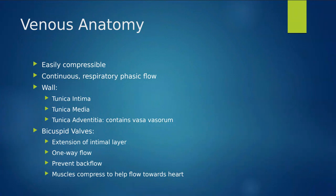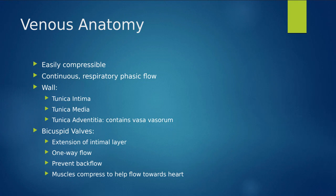Our artery is high pressure — it has really fast traveling boluses of blood. Our heart contraction creates a big pressure wave shooting blood through the arteries. So arteries are high pressure and we can't compress them as easily. But because the veins are low pressure, we can squeeze them, get them to collapse, get those walls to touch — and that's what we want for a patent, meaning normal functioning, vein.